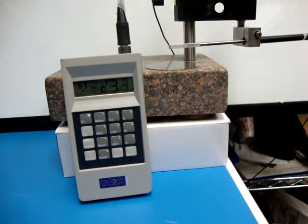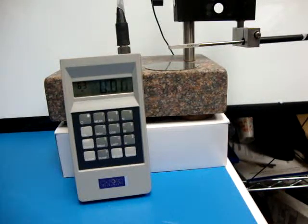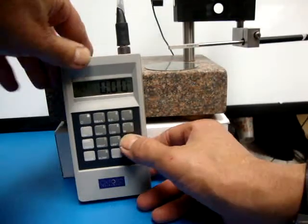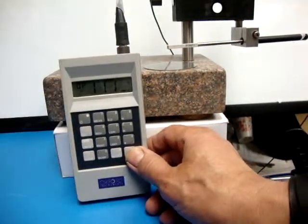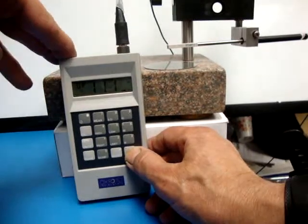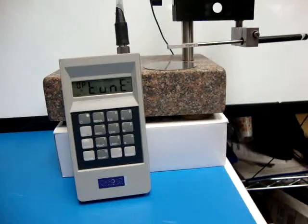Now since every probe has a different offset, the next thing you have to do is tune out the offset for the probe. So you're going to want to do a star 1, 1, 1, and then hit enter. And now it's tuning out the offset for this individual probe.